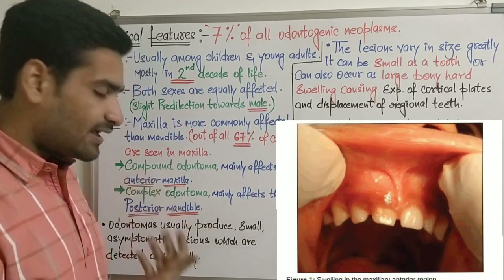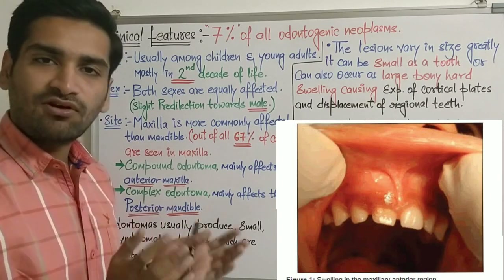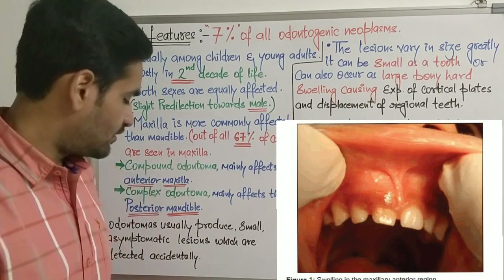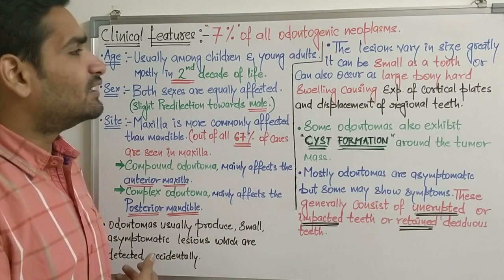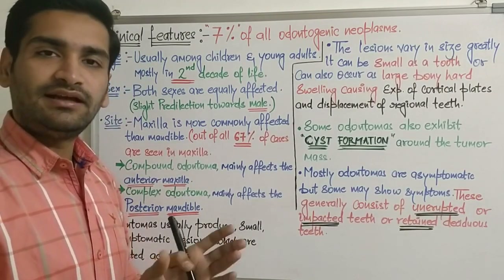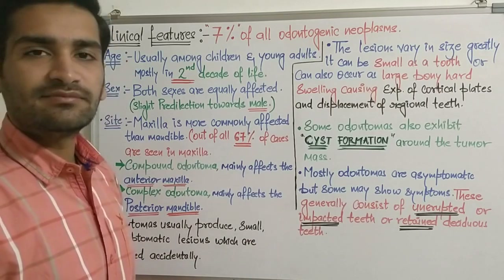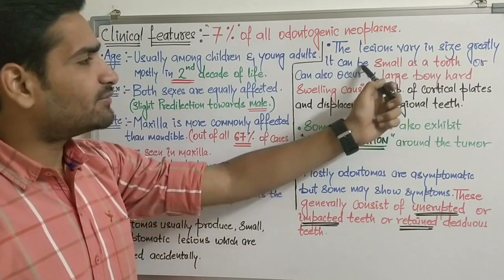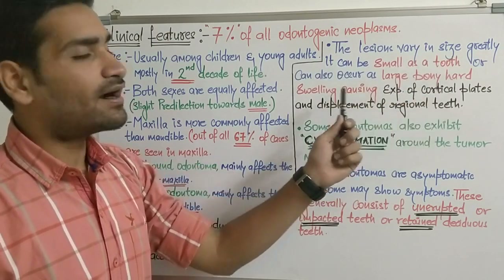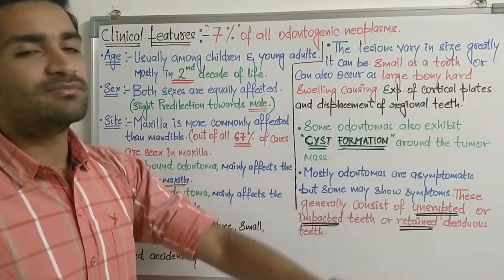Regarding clinical presentation, odontoma usually produces a small, asymptomatic lesion which is detected accidentally — most commonly during routine radiographic examination taken for another purpose. The lesions vary greatly in size: it can be as small as a tooth, or it can also occur as a large bony hard swelling which can cause expansion of cortical plates and displacement of regional teeth.